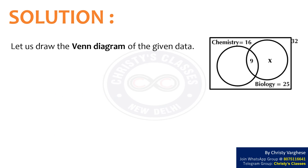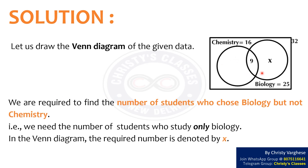Solution. Let us draw the Venn diagram of the given data. We are required to find the number of students who chose biology but not chemistry — that is, we need the number of students who study only biology. In the Venn diagram, this required number is denoted by x.